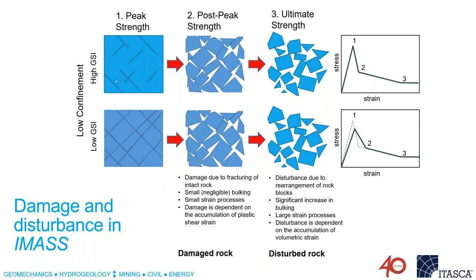For this discussion, let's assume we have two different rock masses — for simplicity, with the same intact rock strength but different structural integrity: one with lower GSI and one with higher GSI. As we load up this rock mass, we are introducing micro-fractures between the intact rock. These micro-fractures start to propagate and coalesce, isolating individual blocks within the intact rock. Between peak strength to post-peak strength, we are damaging the rock due to fracturing of the intact rock. This is associated with very small or negligible bulking — it's more of a small strain process, and numerically this damage is assessed using accumulation of plastic shear strain in the model.